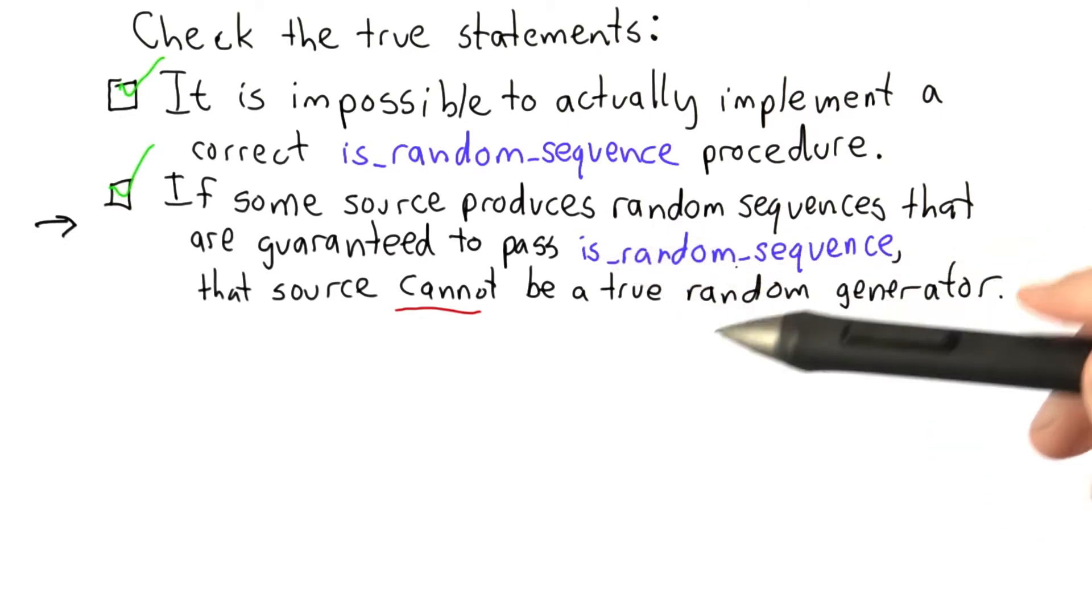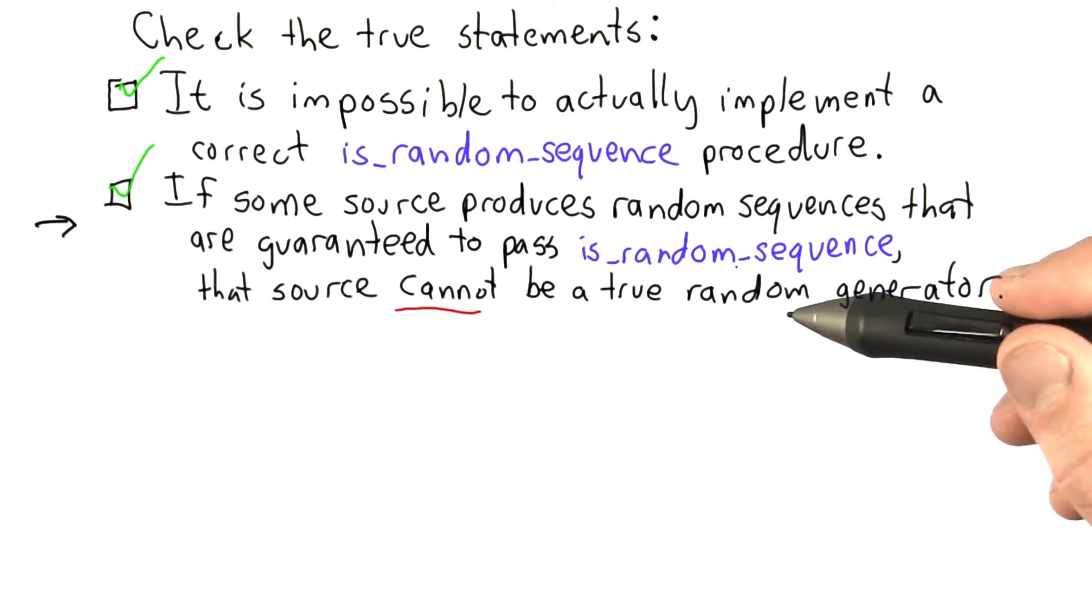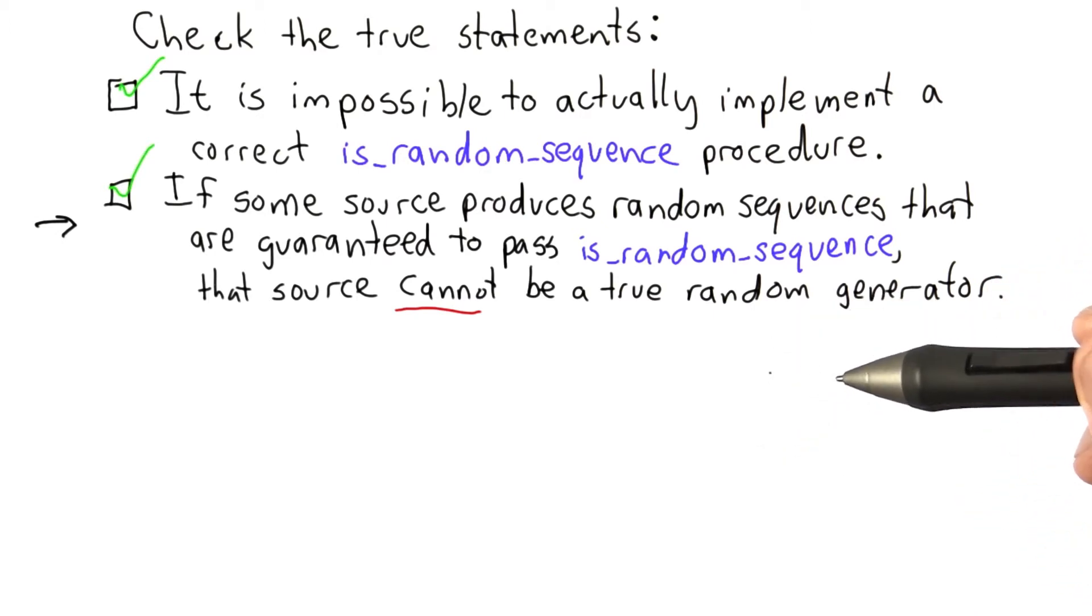Presumably, isRandomSequence would fail, for example, a sequence of 20 zeros, but a true random number generator would eventually produce that sequence. And this further shows the impossibility of having an isRandomSequence procedure.